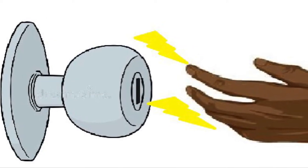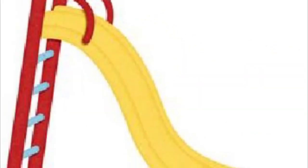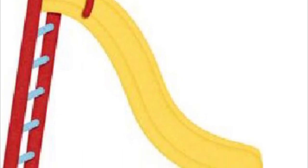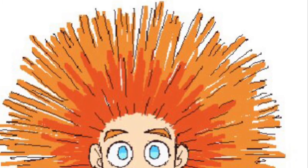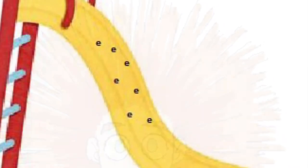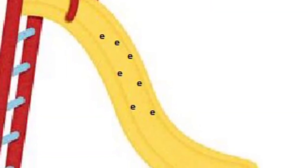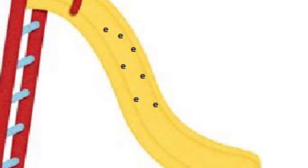That is called static electricity. Another example of static electricity is when you go down a slide and your hair stands up on end. That happens because as you went down the slide, your hair lost electrons to the slide. So electrons moved from your hair and into the slide.